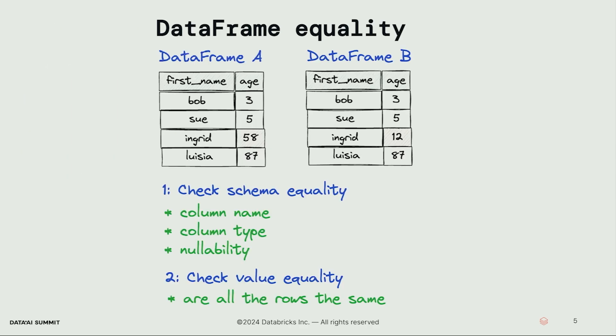Let's look at DataFrame equality at a high level before digging into the unit testing code. A lot of the foundational testing is going to be just comparing two DataFrames. When we're comparing two DataFrames, we're going to do two major steps. One is to check the schema equality — we're going to check that the column name, column type, and nullability property between the two DataFrames is the same.